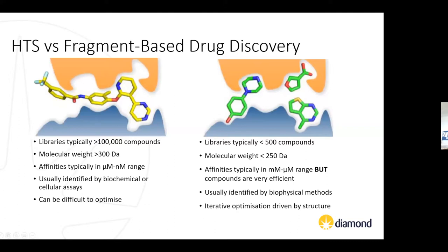As the affinities tend to be in the micromolar range, usually biochemical or cellular assays are used to identify hits. However, these can be difficult to optimize and some more challenging targets have very low hit rates using HCS. In comparison, fragment-based drug discovery uses libraries of considerably smaller compounds, usually 250 to 300 daltons or less. As there's a reduction in molecular complexity, we can screen a smaller number of compounds and still sample a large area of chemical space.